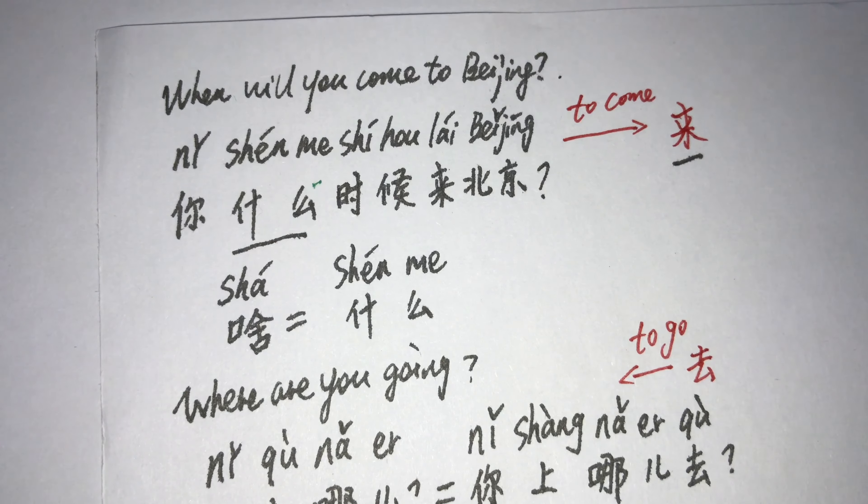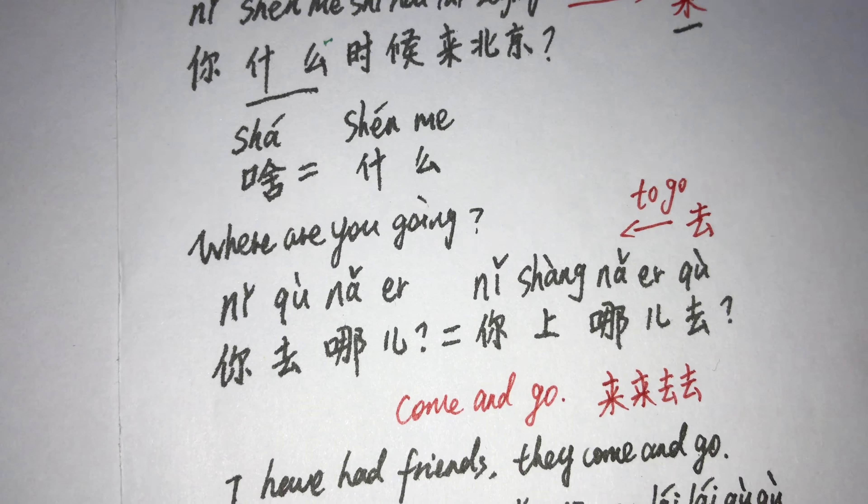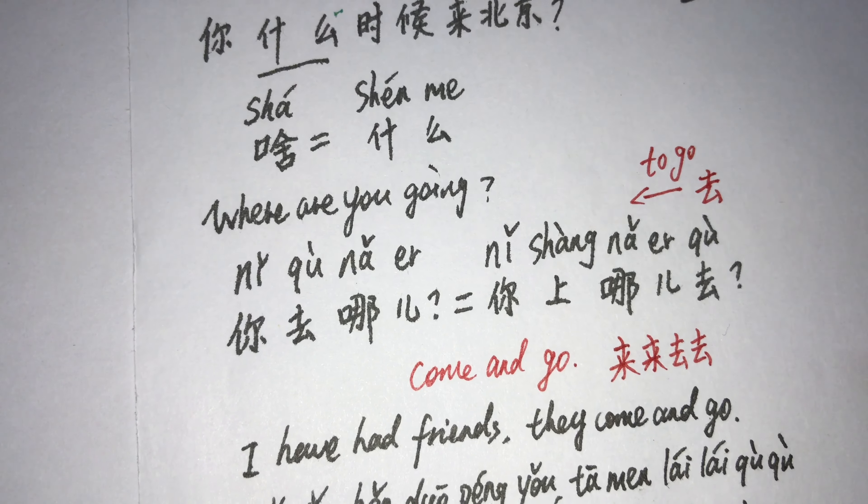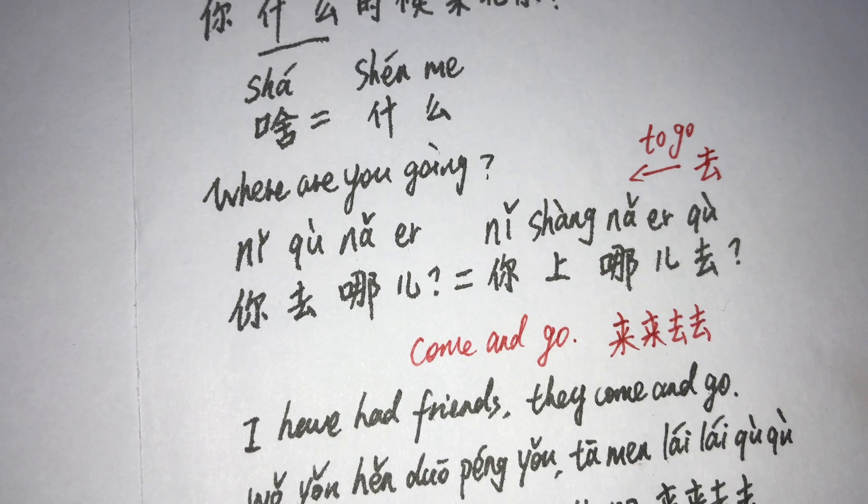来, to come. When will you come to Beijing? 你什么时候来北京? 你啥时候来北京? 去, to go. Where are you going? 你去哪儿?